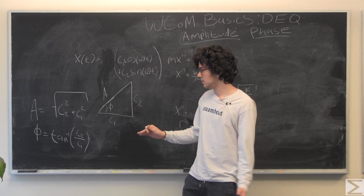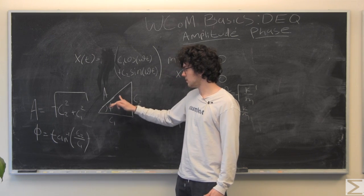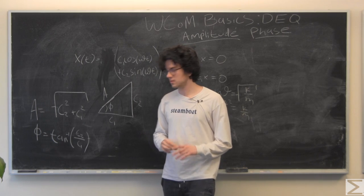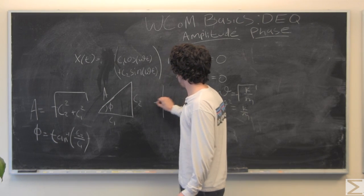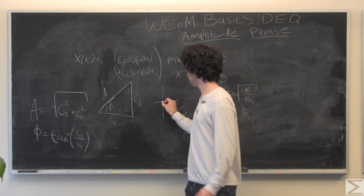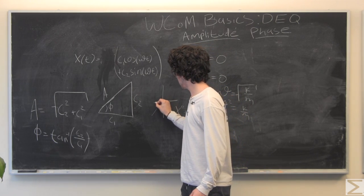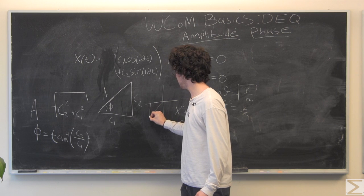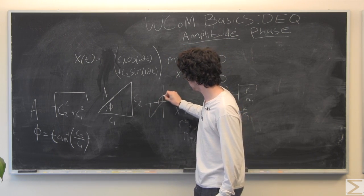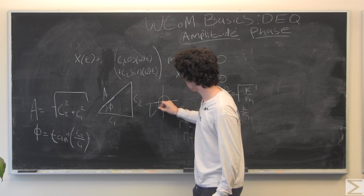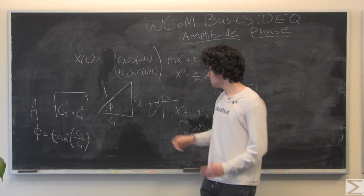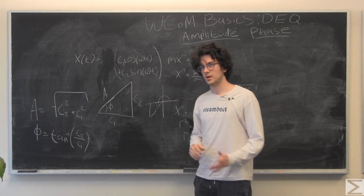One thing to note here is that this will always assume that and give you back an angle that is in the first quadrant. So, one thing that you want to keep in mind is that, for example, if both of your c2 and c1s are negative when you're solving for this, you're going to want to add pi to phi.